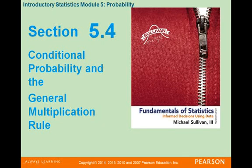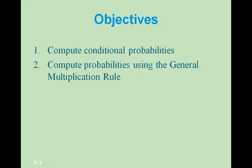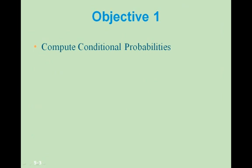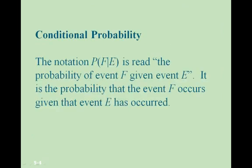Section 5.4: Conditional Probability and the General Multiplication Rule. In this section, we'll look at two objectives. Objective 1: we want to compute conditional probabilities. With conditional probability, the notation P(F|E) is read as the probability of event F given event E. It is the probability that event F occurs given that event E has occurred.